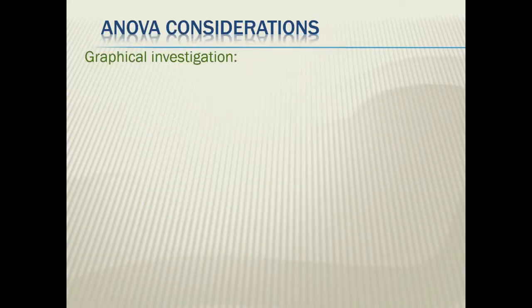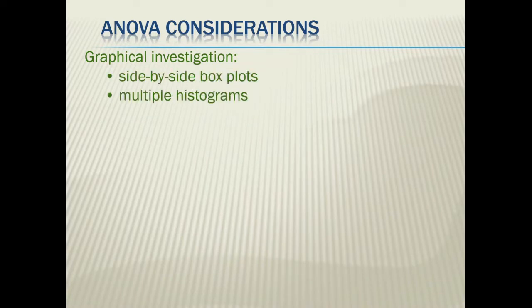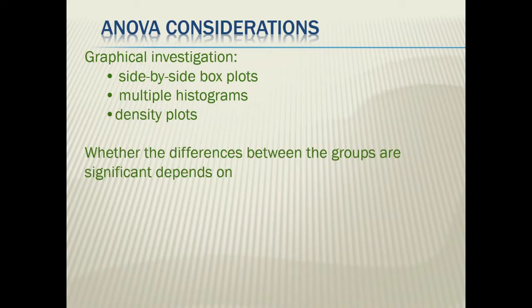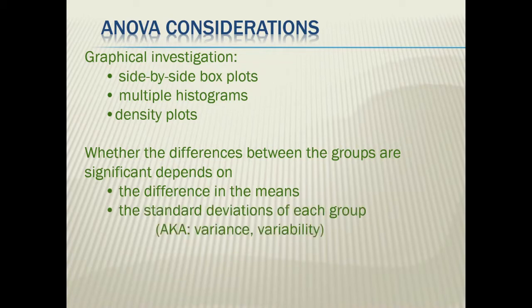So some considerations with an ANOVA. Let's think about maybe how we want to look at this graphically. We can either do some side-by-side box plots or maybe some histograms. We could look at density plots. We also want to consider whether the differences between the groups are significant. Whether their significance depends on either the difference in the means or the difference in the variability or variance. So you can kind of look at either one of these.